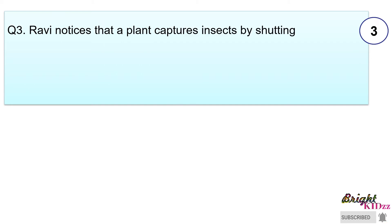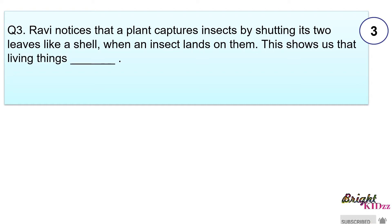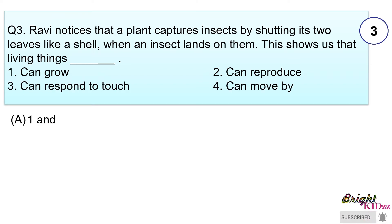Ravi notices that a plant captures insects by shutting its two leaves like a shell when insects land on them. This shows that living things: 1. Can grow, 2. Can reproduce, 3. Can respond to touch, 4. Can move by themselves.